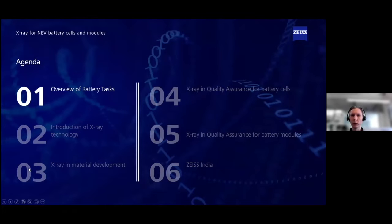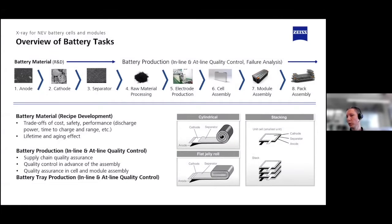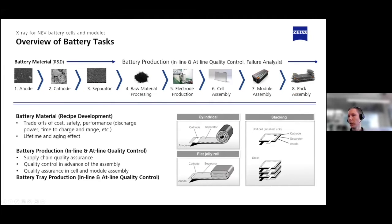Let's start with our view of battery tasks. We can divide the process of manufacturing a battery into a lot of different steps and group them as seen here. The battery material covers everything about research and development — anode, cathode, and separator material. Then we start with battery production, which includes processing of raw materials, electrode production, cell assembly, module assembly, and battery pack. Many possible issues do not depend on the exact format of the cell, so a lot of things we'll see today can be used for cylindrical cells, flat pouch cells, or stacked cells.